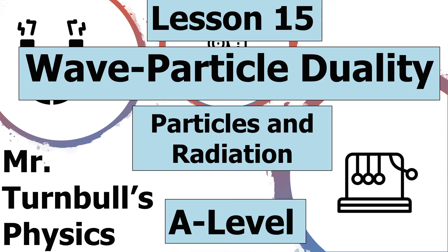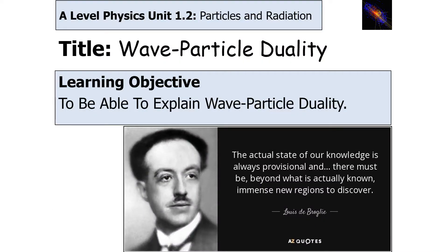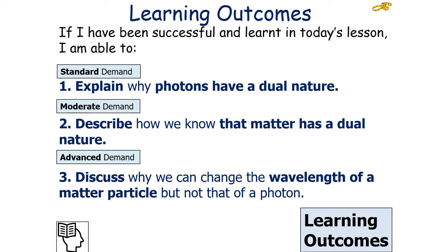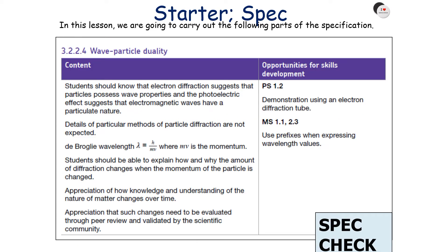Hello and welcome to today's lesson on wave-particle duality, which is part of the particles and radiation topic in AQA A-level physics. In today's lesson we're going to look at explaining what wave-particle duality is. If we're successful, we should be able to explain why photons have a dual nature, describe how we know that matter has a dual nature, and discuss why we can change the wavelength of a matter particle but not that of a photon, linking into AQA A-level physics specification 3.2.2.4.